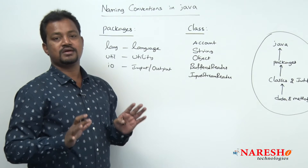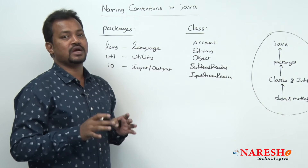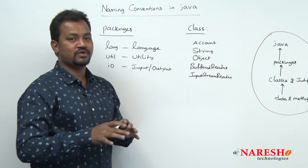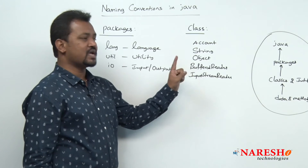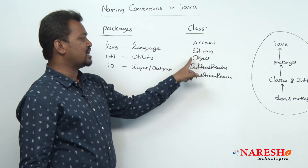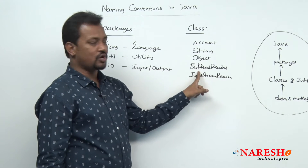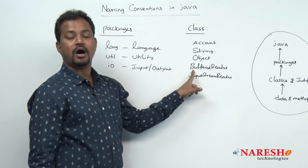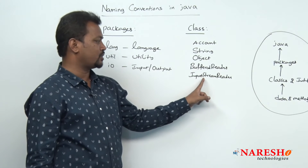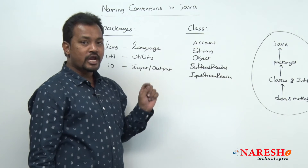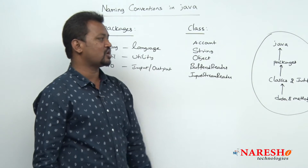Class is a collection of data and methods. If I use one single word, the first letter is capital — Account, String, Object. If I have two words, both starting letters should be capital — BufferedReader. Whenever I have three words — InputStreamReader — I, S, and R are all capital. These are the naming conventions of package and class.